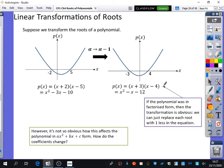I could work out the quadratic equation by doing (x + 3)(x - 4), which is x² - x - 12. This is the transformed version of the quadratic, shifted to the left. If the polynomial is in factorized form, then the transformation is really obvious. We can just replace each root with one less in the equation. However, it's not so obvious how this affects the polynomial in ax² + bx + c form. How do the coefficients change? We want to be able to go from this to this without having to do any of the factorized forms, because for cubics and quartics, it's not going to be very useful.